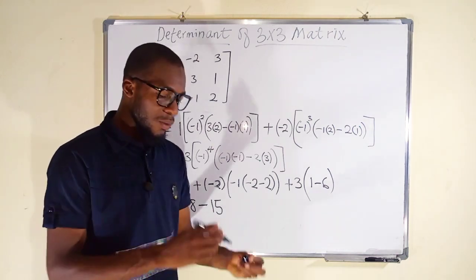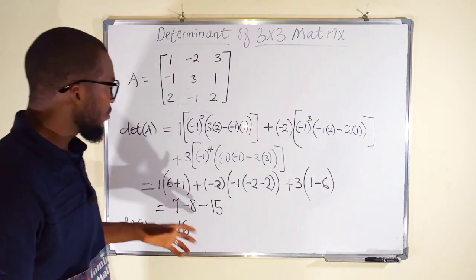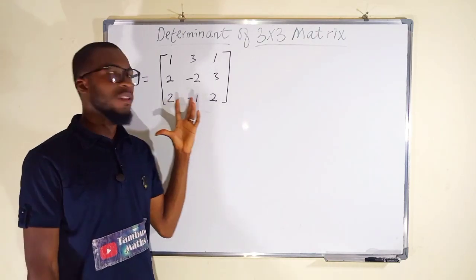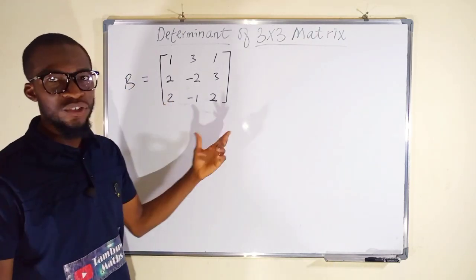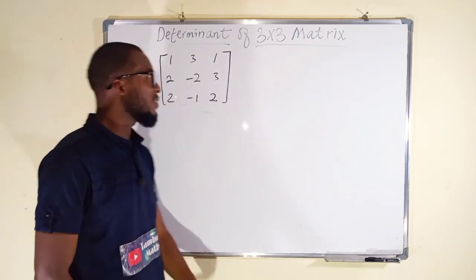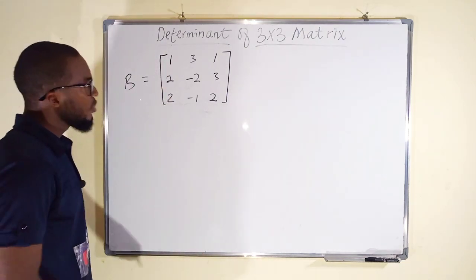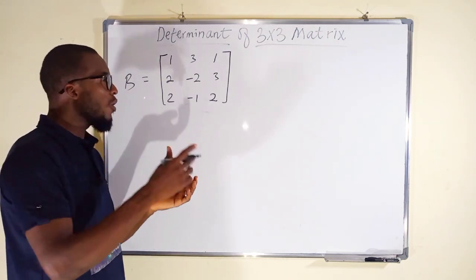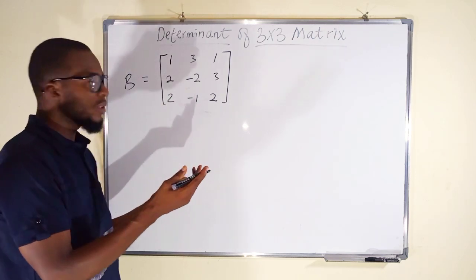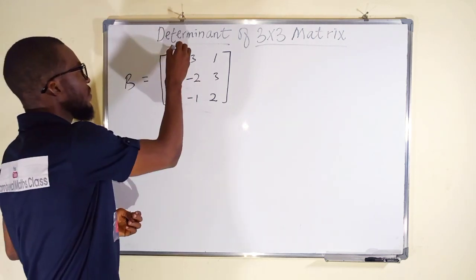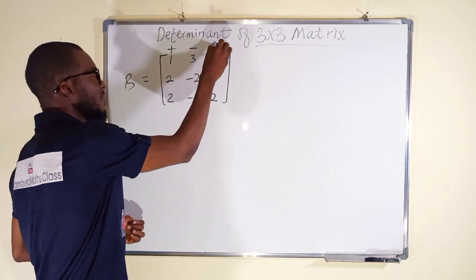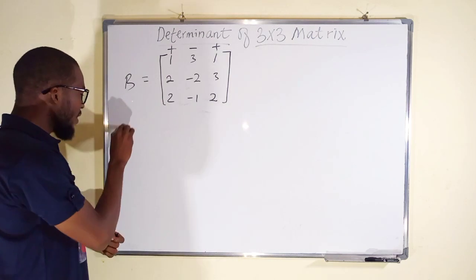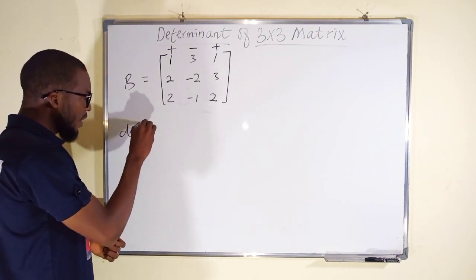Let us take the second problem, but I am going to skip some steps. Here is matrix B, a 3 by 3 matrix, and we want to find its determinant. Because of the sign pattern from negative 1 to the power of the subscript sum, the signs for the first row are: positive, negative, positive.